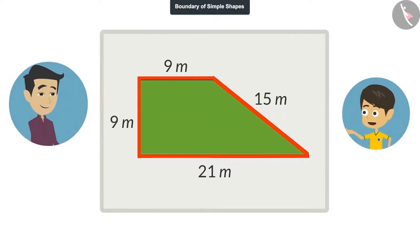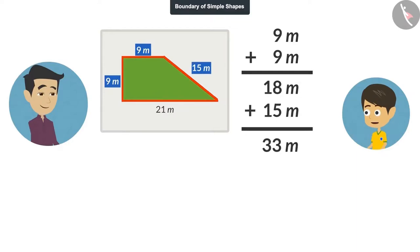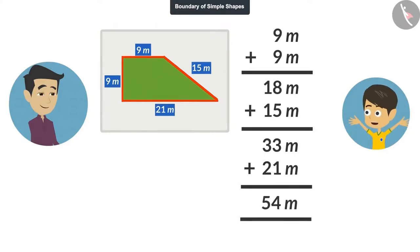Okay, now I know the length of all the lines. By adding these, I will get the length of the field's boundary. If you add 9 meters to 9 meters, the answer will be 18 meters. If we add 15 meters to 18 meters, the answer will be 33 meters. And if we add 21 meters to 33 meters, the answer will be 54 meters. That means the boundary of this field is 54 meters.